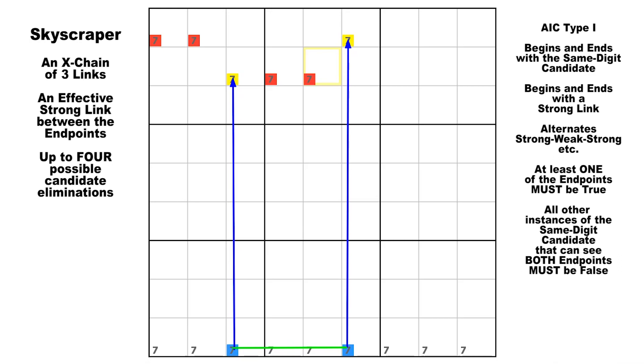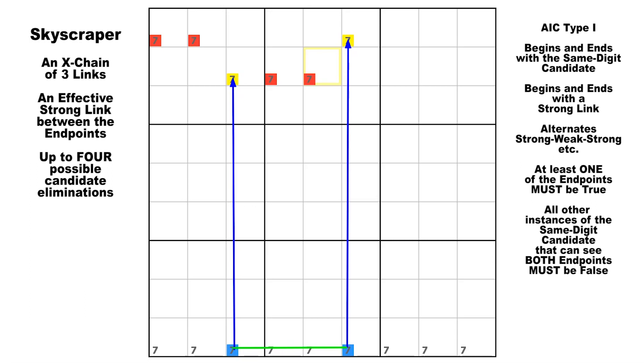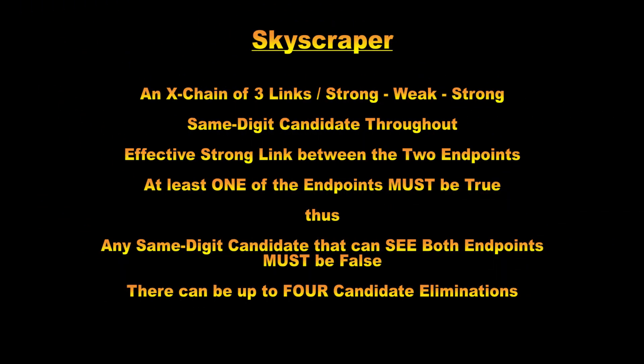A skyscraper is an X-chain of three links — strong, weak, strong — using the same digit candidate throughout. There is an effective strong link between the two endpoints, which means at least one of the endpoint candidates must be true. Thus, any same-digit candidate that can see both of the endpoints must be false and can therefore be eliminated. There can be up to four candidate eliminations with a skyscraper.